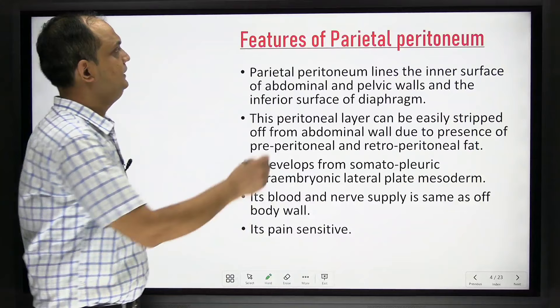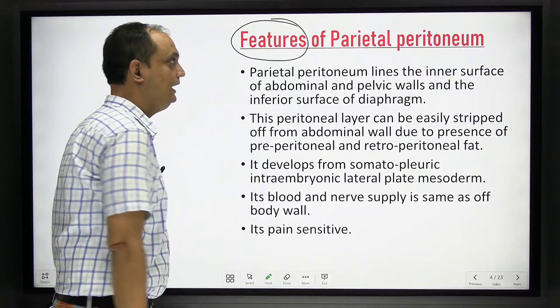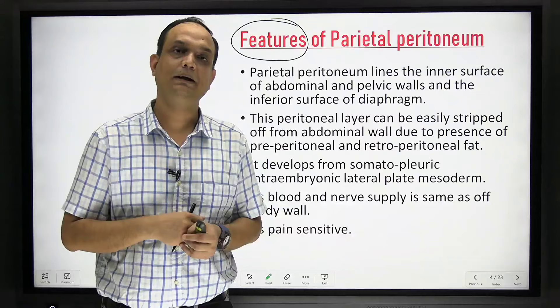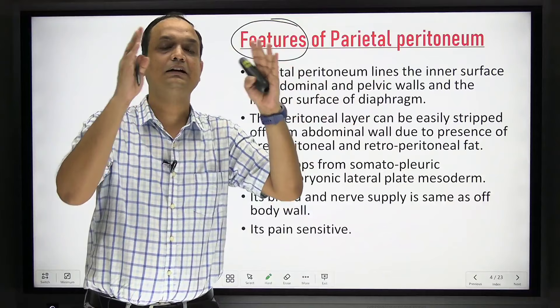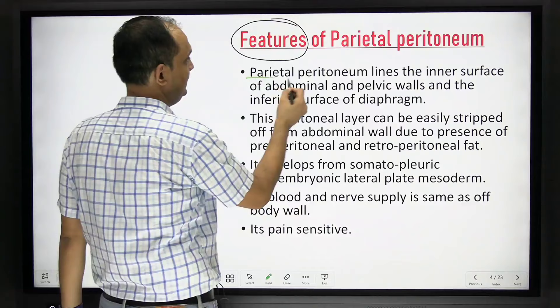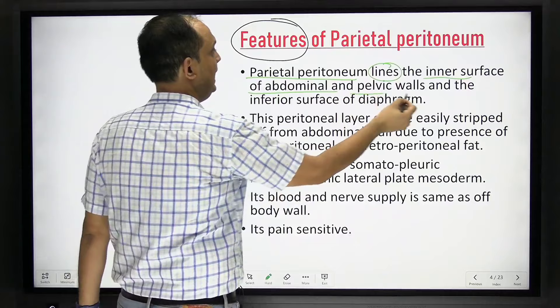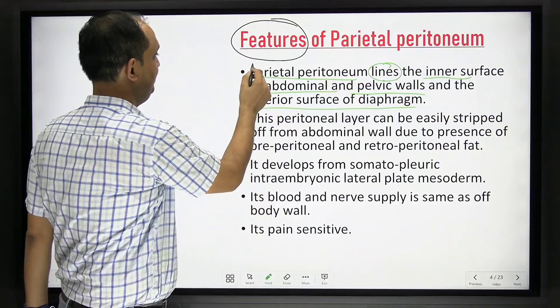What are the features of peritoneum? The features of parietal and visceral peritoneum are similar to pleura. The parietal peritoneum lines the inner surface of the abdominal wall and pelvic wall — it has nothing to do directly with organs, just as parietal pleura lines the chest wall.